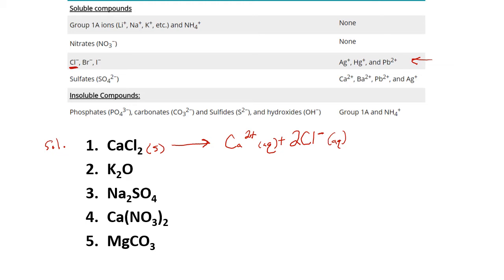Now to double-check our charges: on the left-hand side, there is no charge written, so that means it is neutral or has zero charge. On the right-hand side, our calcium gives us a plus two charge. We have two chlorides, each with a negative one, which gives us a minus two. So overall, on the right-hand side of the chemical reaction, we have zero charge.